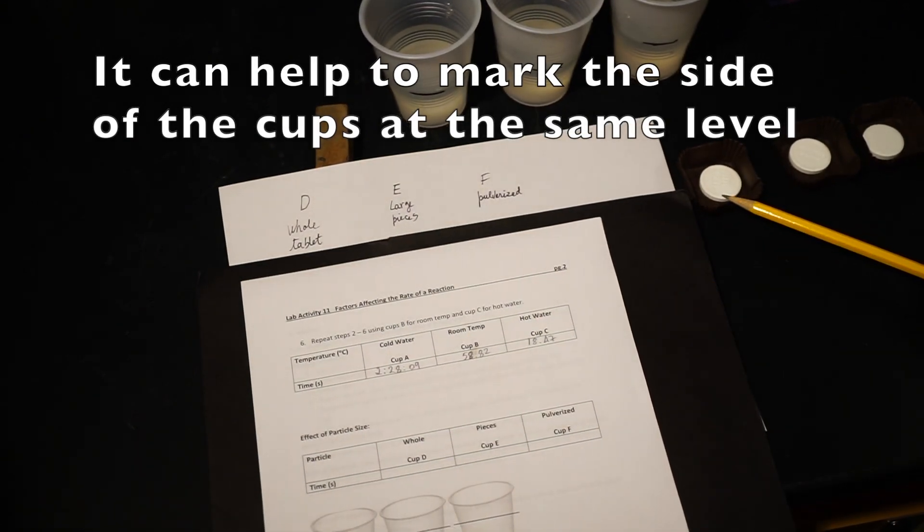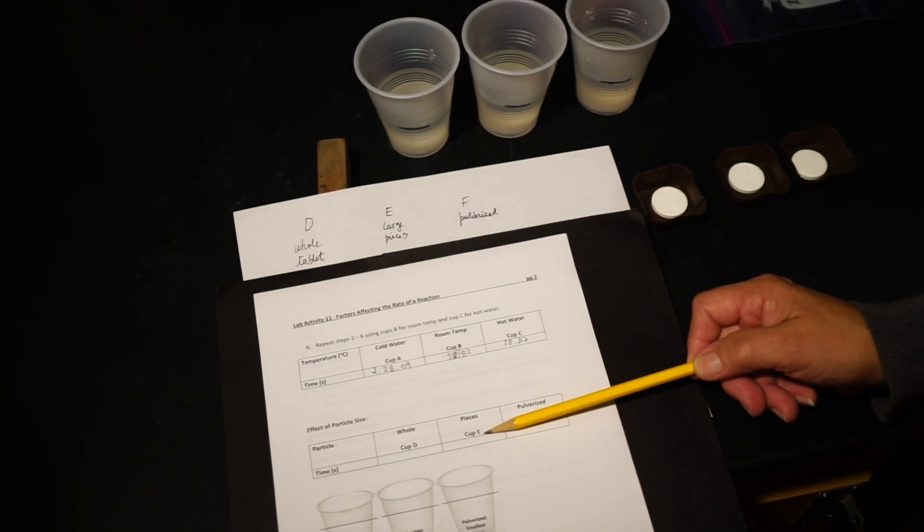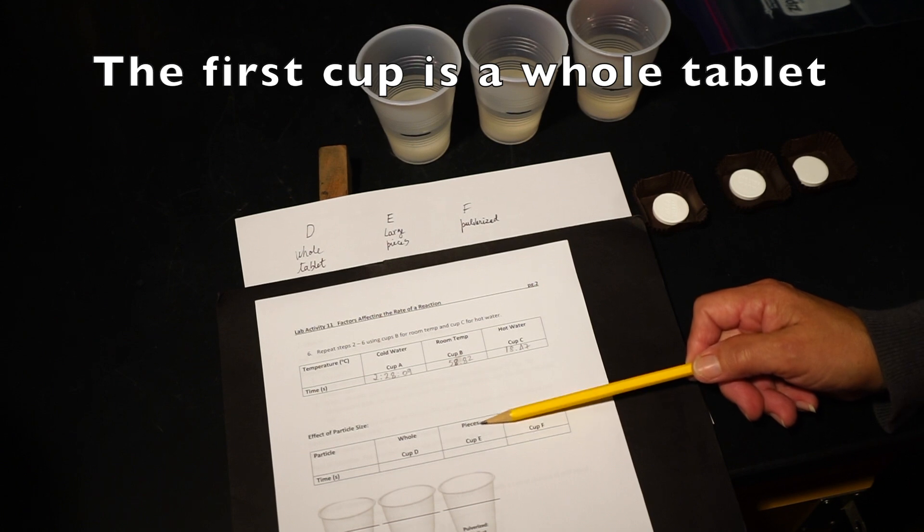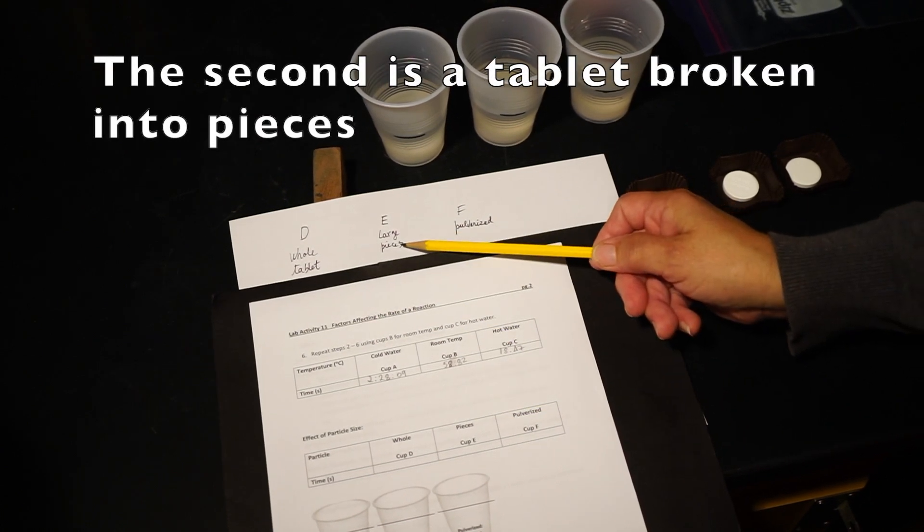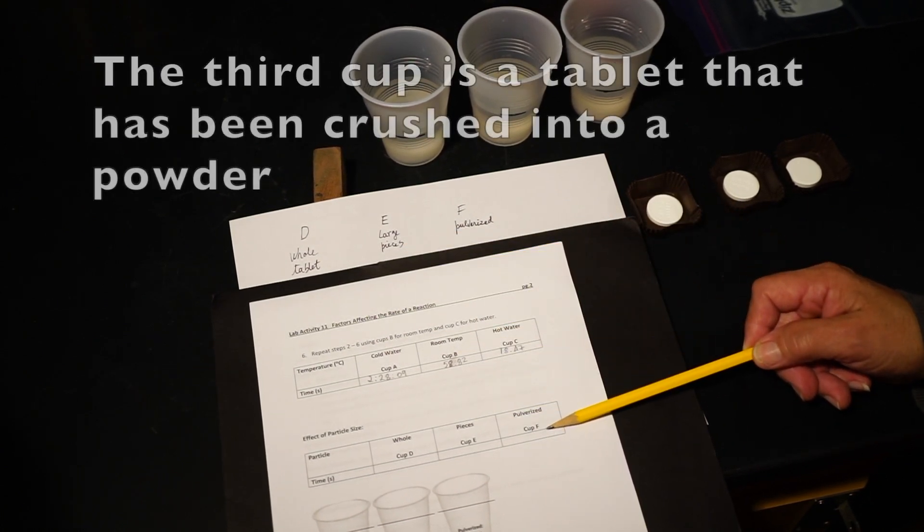The first cup will be testing a whole tablet, the second will be a tablet broken into four pieces, and the third will be a tablet that has been crushed into a powder.